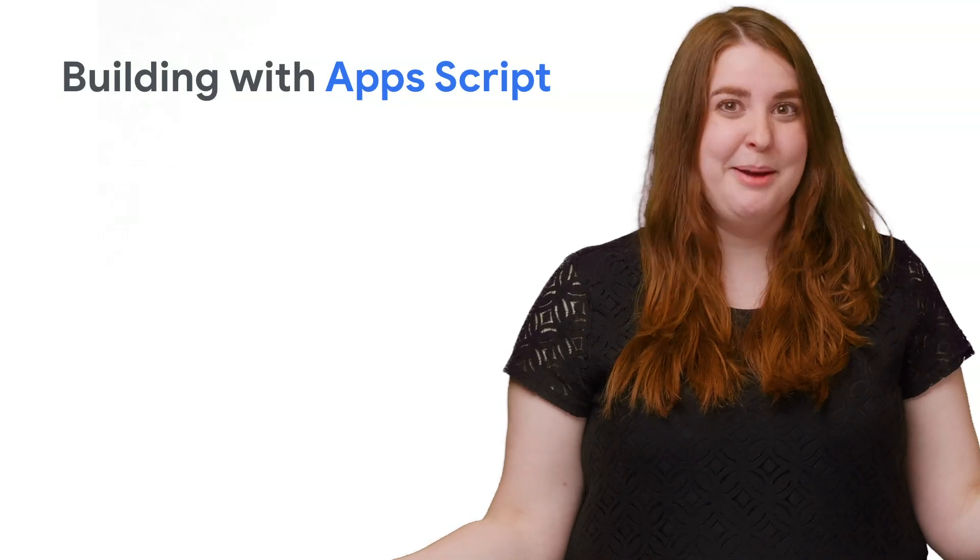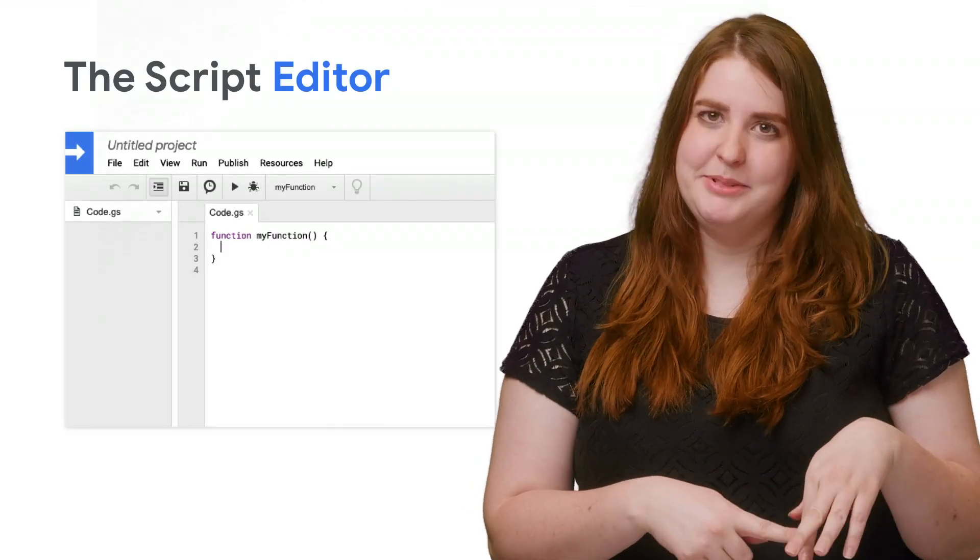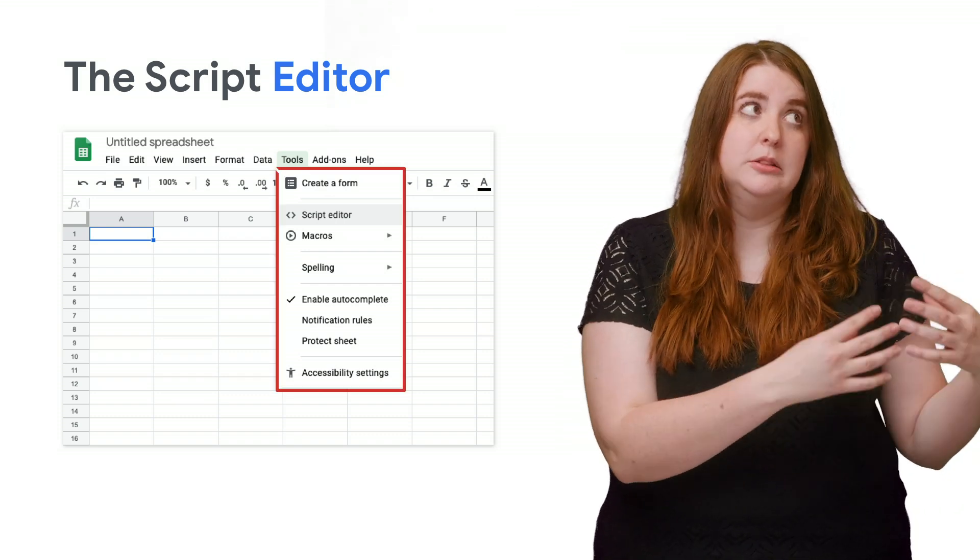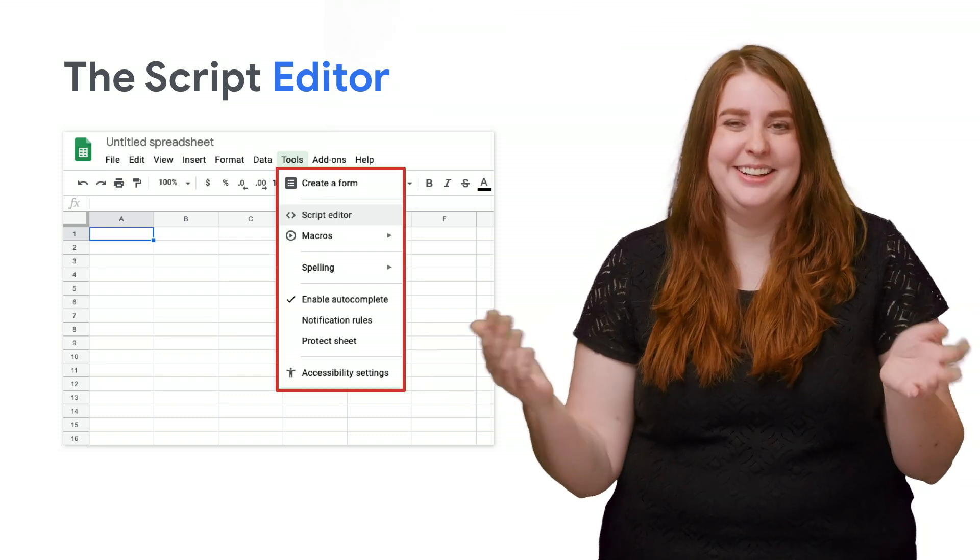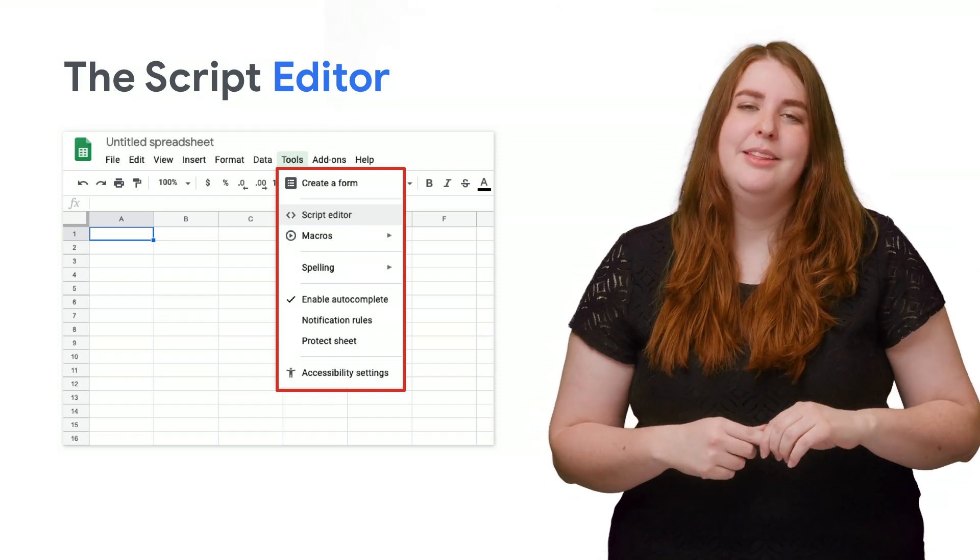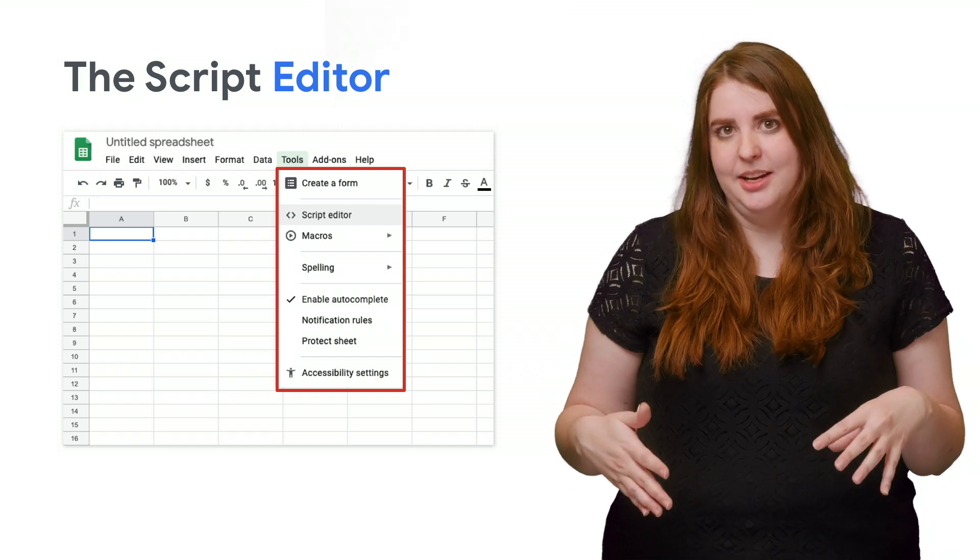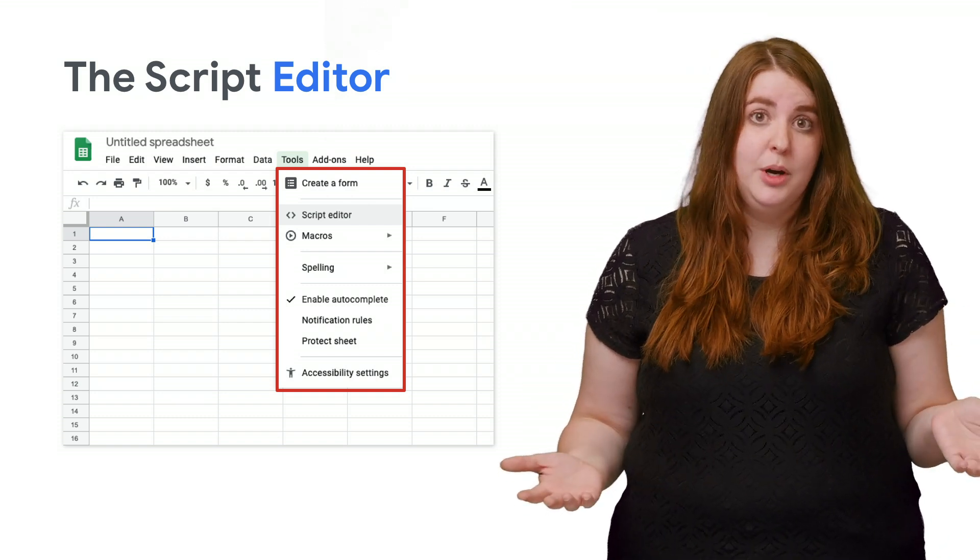So you're convinced that you want to try Apps Script because it's the best, and now you need to get started. That means you need to open the Script Editor. Fun fact, how you open the Script Editor is going to determine what sort of script you are working with. If you're already in a Google Doc or Sheet or Slide, you can click Tools and Script Editor in the menu bar. This is actually how most people discover Apps Script because they are working in a document and realize they want to automate part of their work.